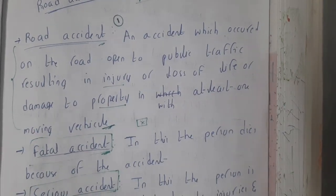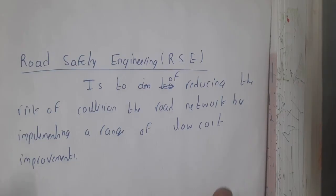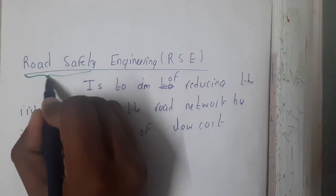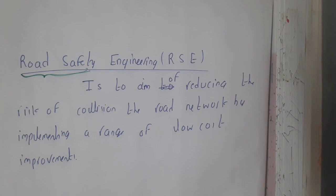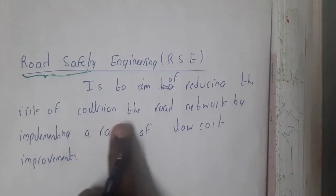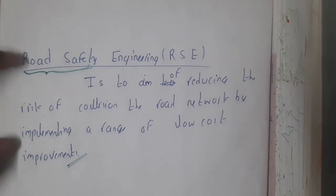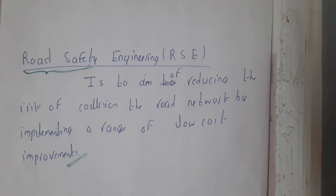Now let us go through the definition of road safety engineering. From the words itself — using engineering mechanisms or methodologies to safeguard the road and make people's journeys safe, through concepts like constructing signs, signals, and related infrastructure. The formal definition: it aims at reducing the risk of collision on the road network by implementing a range of low-cost improvements.